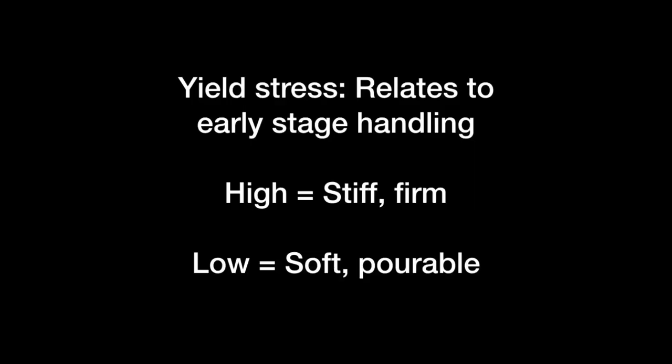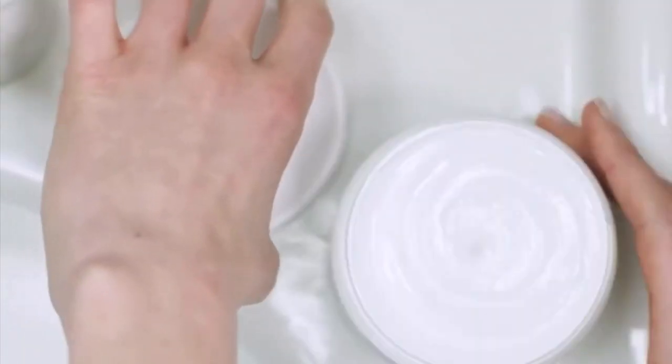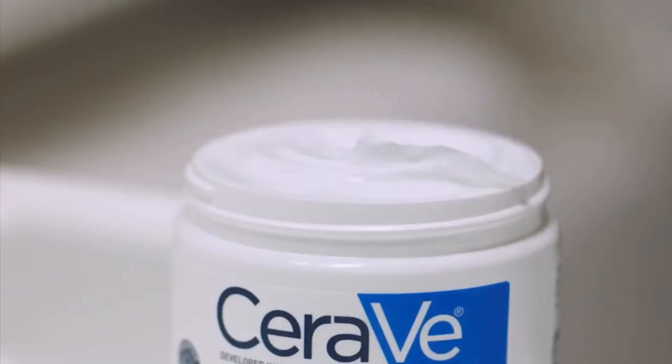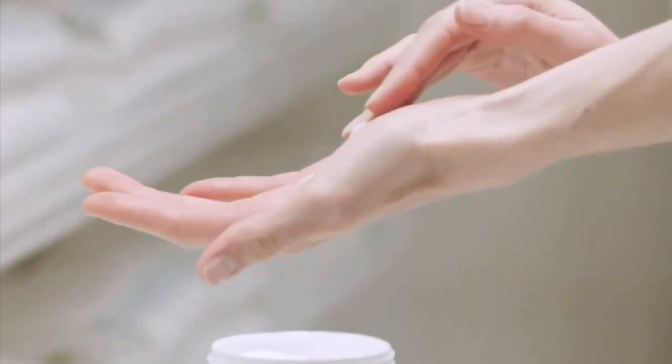Yield stress is a measure of the strength of the soft solid structure that we see in a cream, an ointment or even in a lotion. Yield stress is highly relevant in the early stages of the experience — the appearance, the first touch and the initial application onto the skin.